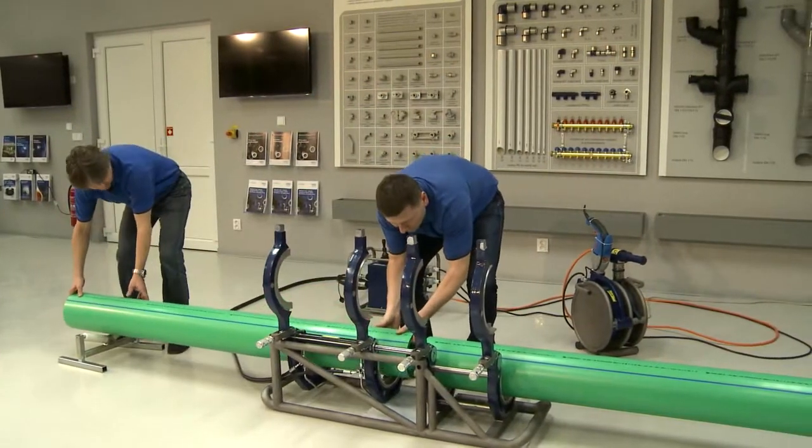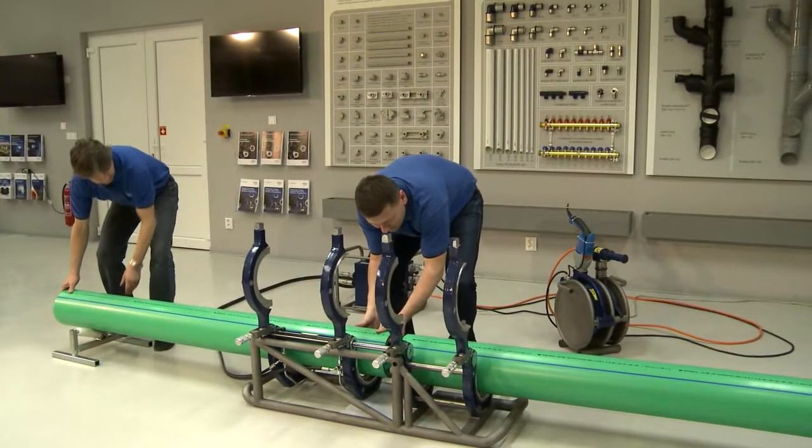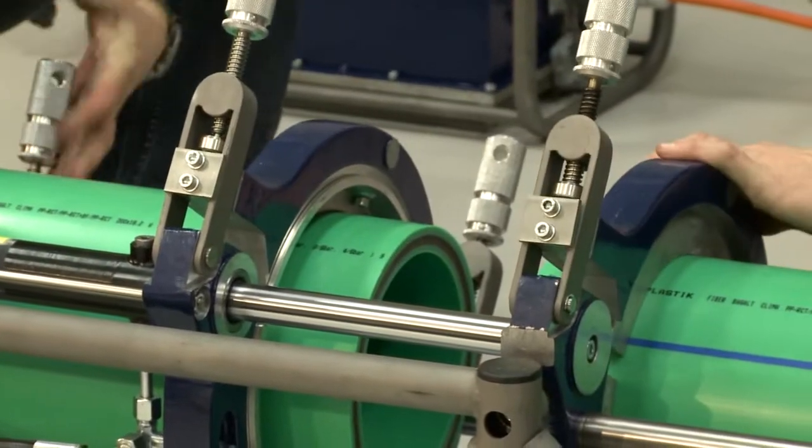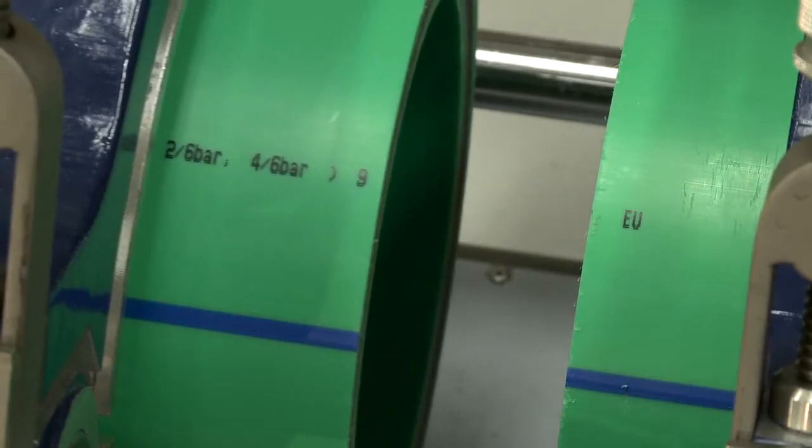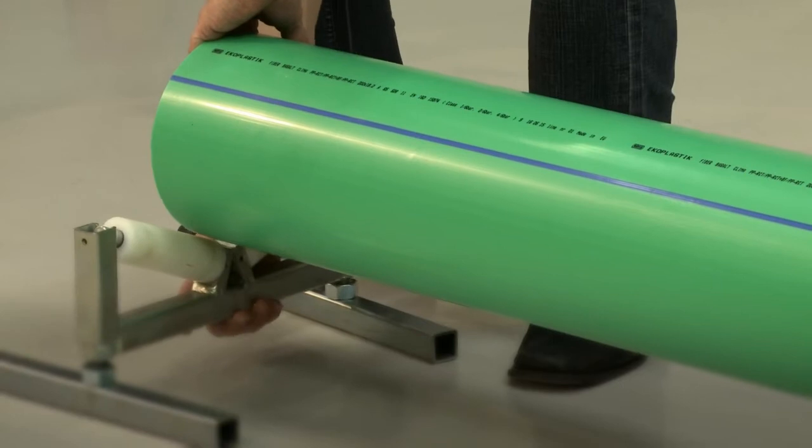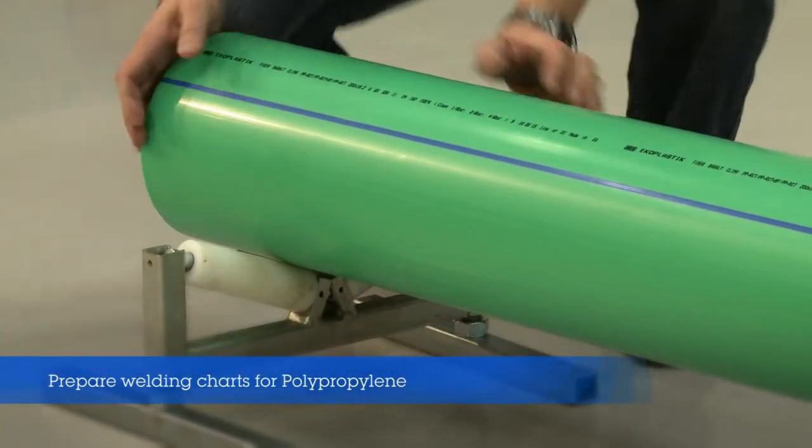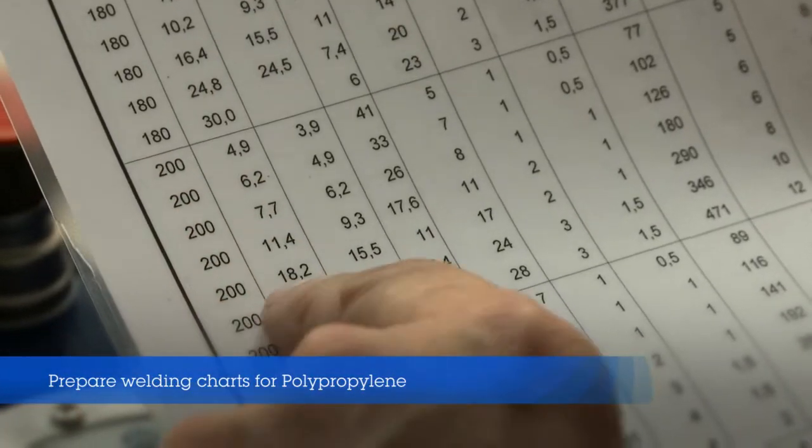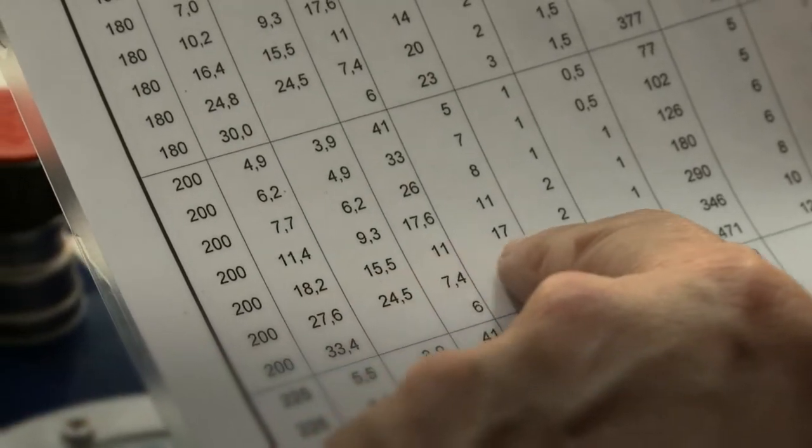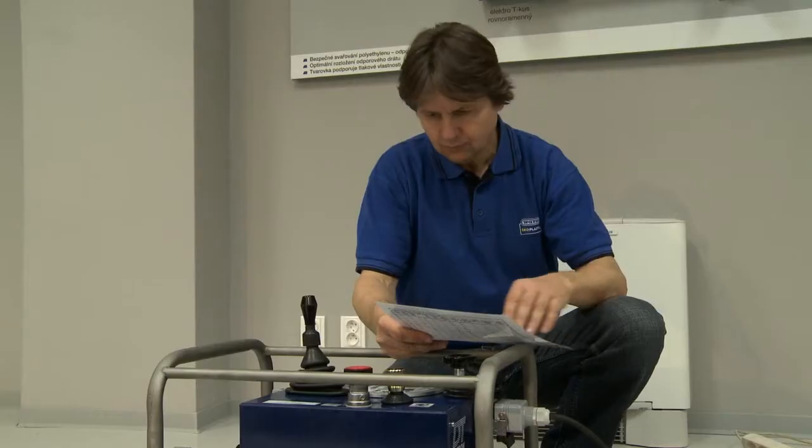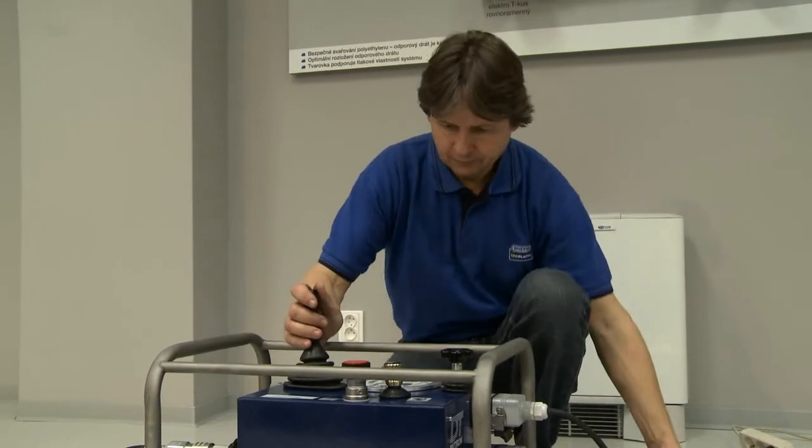Now put the pipes into the clamping jaws and check their alignment. Align the pipe ends if necessary with the help of support units. Have a polypropylene welding chart ready and make sure it matches the welding fixture. In the chart you can find the right values for welding a particular pipe diameter. Follow the chart and listed values.